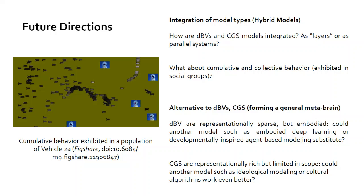If we talk about the metabrain model more generally, there are alternatives to using DBVs and CGSs. Developmentally Braitenberg vehicles are representationally sparse but embodied. Could we find another type of model like that that has an embodied component but is also representationally sparse? Could we use something like embodied deep learning or developmentally inspired agent-based modeling to substitute for this? Perhaps, and we could compare those models in terms of performance. A word on CGSs is that they're representationally rich but limited in scope, depending on your application. Could another model, such as ideological models like ideological modeling or cultural algorithms, work even better than that? Again, we're dealing with things that are alternates to the CGS but serve the same role.